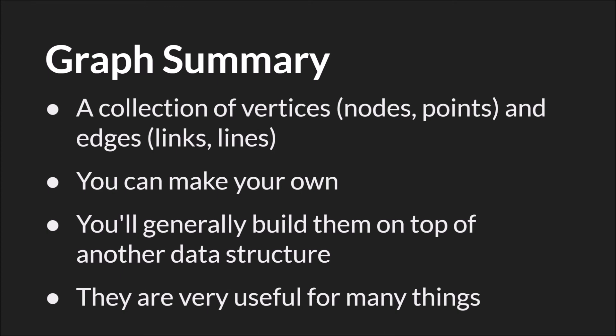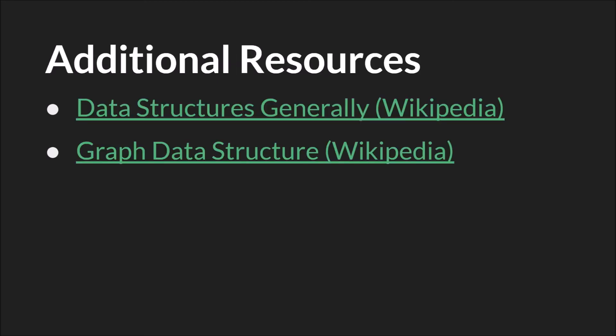In summary, a graph is a collection of vertices or nodes and edges, which can also be called links or lines. You can make your own and generally build them on top of another data structure — we used maps of maps, but you could use maps of lists, lists of maps, or arrays. They're very useful for many different things. We created a simple one to add nodes and edges and move between them for a keyboard-driven menu system, but you could use them for so much more. I'd highly recommend reading about graph data structures on Wikipedia. The links will be below, as will links to the slides and source code.